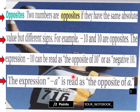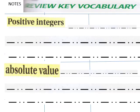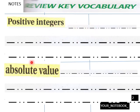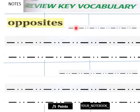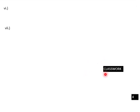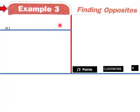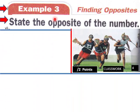The expression negative negative 10 can be read as the opposite of 10, or as negative 10. The expression negative a is read as the opposite of a. Now students, define in your own words: positive integers, absolute value, and opposites in your notebook. I do notebook checks usually on Fridays, so I expect to see these definitions there.